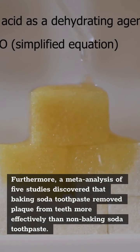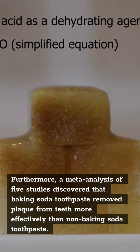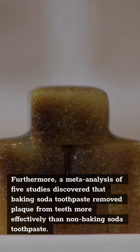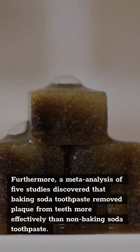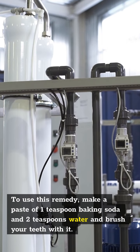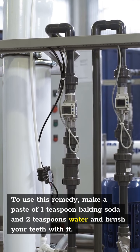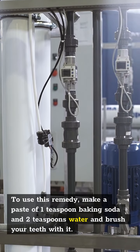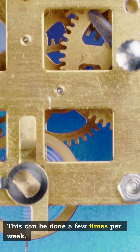Furthermore, a meta-analysis of five studies discovered that baking soda toothpaste removed plaque from the teeth more effectively than non-baking soda toothpaste. To use this remedy, make a paste of one teaspoon baking soda with two teaspoons water and brush your teeth with it. This can be done a few times per week.